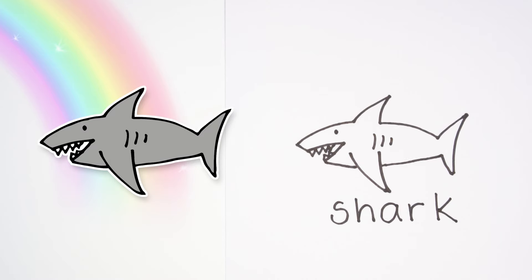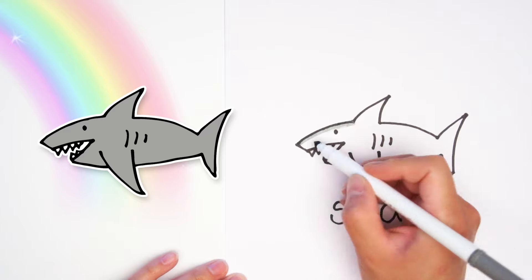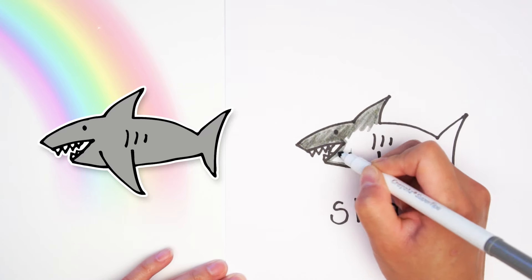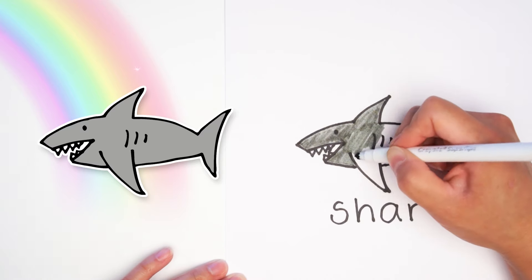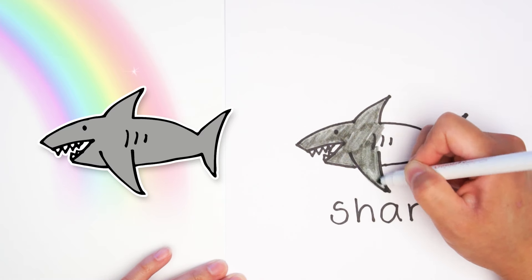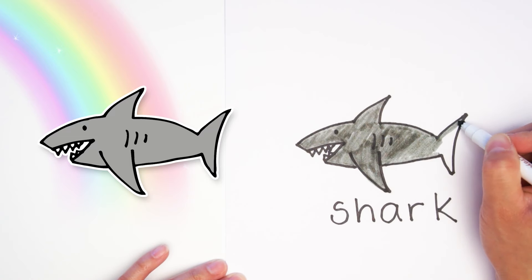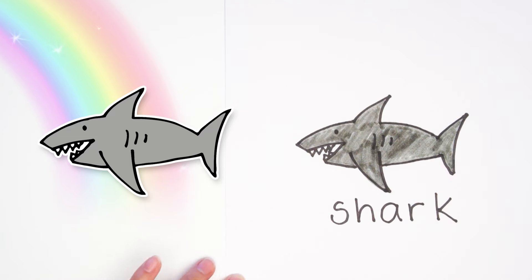Now for the very last part, grab a gray marker or crayon or colored pencil and let's color in this shark. It looks like I'm coloring super fast, but this is just in fast forward. Push pause at any time if you want to take your time.